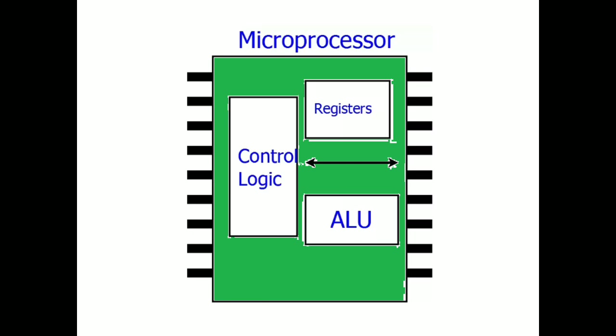A microprocessor is simply a chip which consists of control logic — that is, logical operations are handled here — then an ALU, which is the Arithmetic and Logic Unit, and registers. Mathematical calculations are done in the ALU, and the results from both the control logic and ALU can be stored temporarily in registers. In a microprocessor, only these three major components are present.